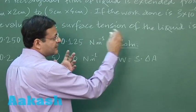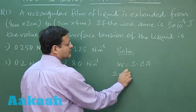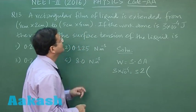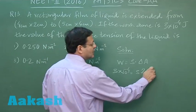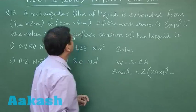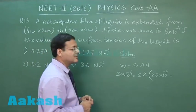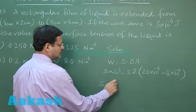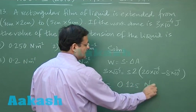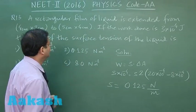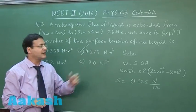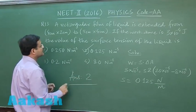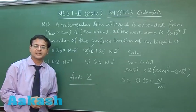The work done is given as 3 × 10⁻⁴ J. Effectively taking 2 surfaces, the final surface area is 20 cm², so 2 × 20 × 10⁻⁴; and the initial surface area is 8 cm², so 8 × 10⁻⁴. Doing the calculation, the surface tension comes out to be 0.125 N/m. So I will be choosing answer 2 for question 13, as option 2 states 0.125 N/m.